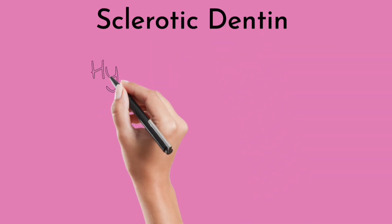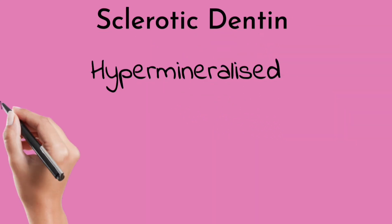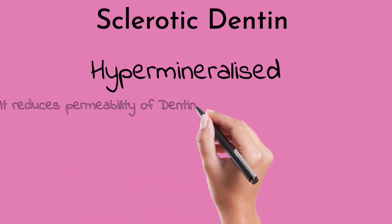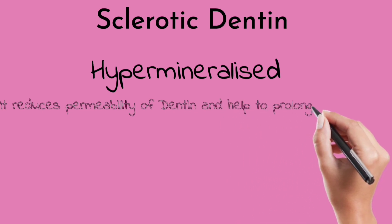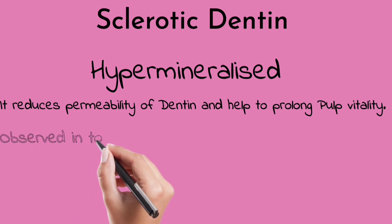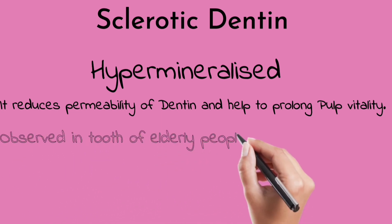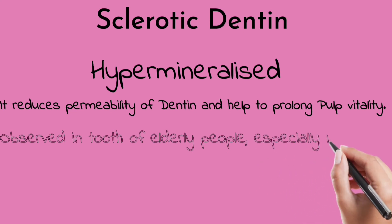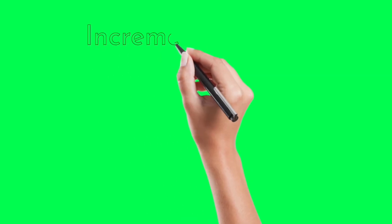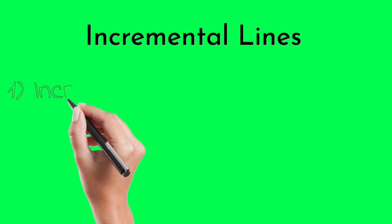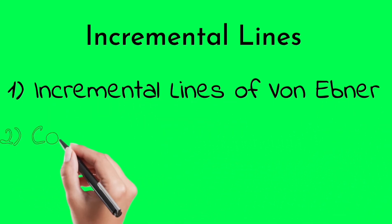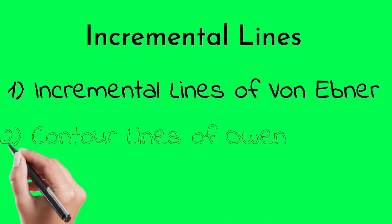Sclerotic dentine, also called transparent dentine, is a hypermineralized structure. It is observed in teeth of elderly people, especially in the root portion, and in cases of caries, attrition, or cavity preparation. Sufficient stimuli cause crystals to fill the dentinal tubules. This sclerosis reduces the permeability of dentine and helps in prolonging pulp vitality.